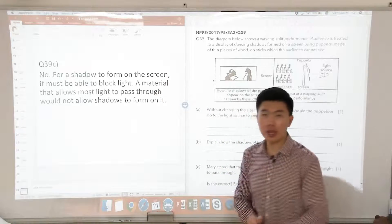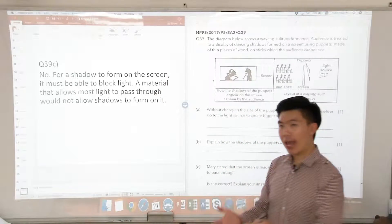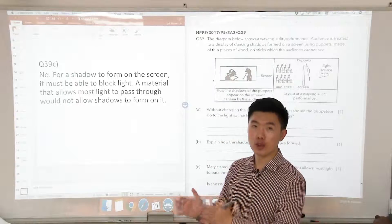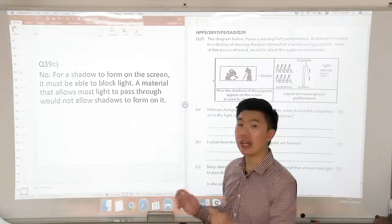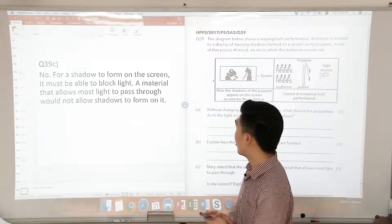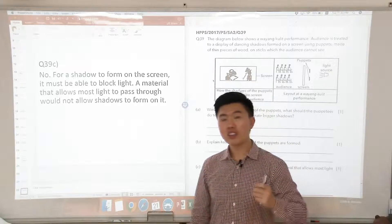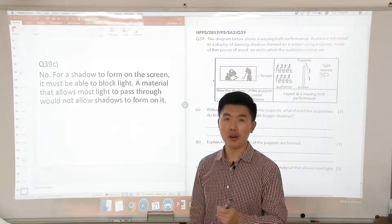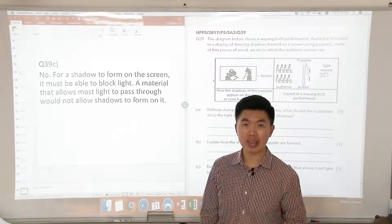Why not? Because for a shadow to form on the screen, it must be able to block light. So as long as this is an opaque or a translucent material which blocks light, a shadow can form on it, but definitely not a transparent material. So we say a material that allows most light to pass through would not allow shadows to be formed on it. That is the answer for 39C.